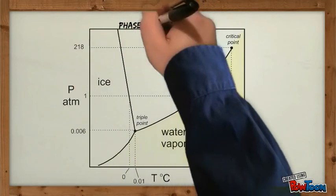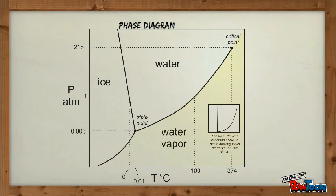Finally, here's a phase diagram, which gives the temperature and pressure at which a substance exists as a solid, liquid, or gas.